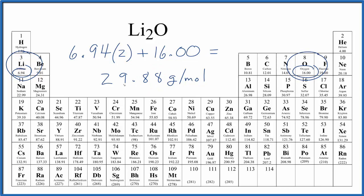What this number means is that if you have 29.88 grams of Li2O, that's going to be one mole. If you have one mole of Li2O, the mass is going to be 29.88 grams.